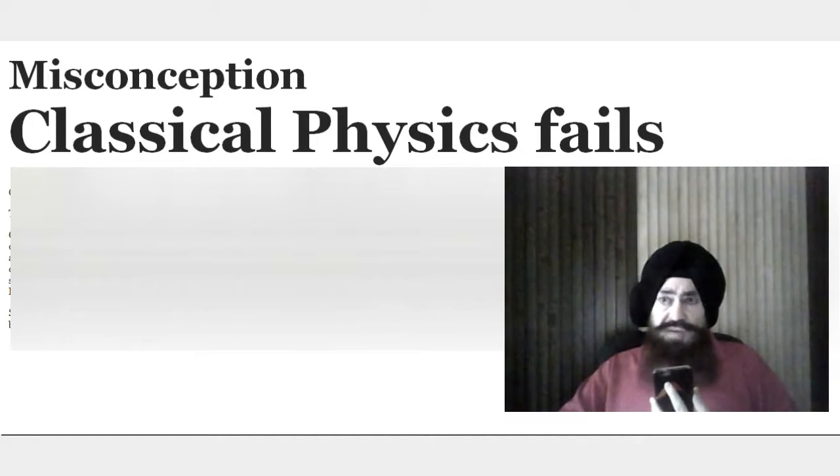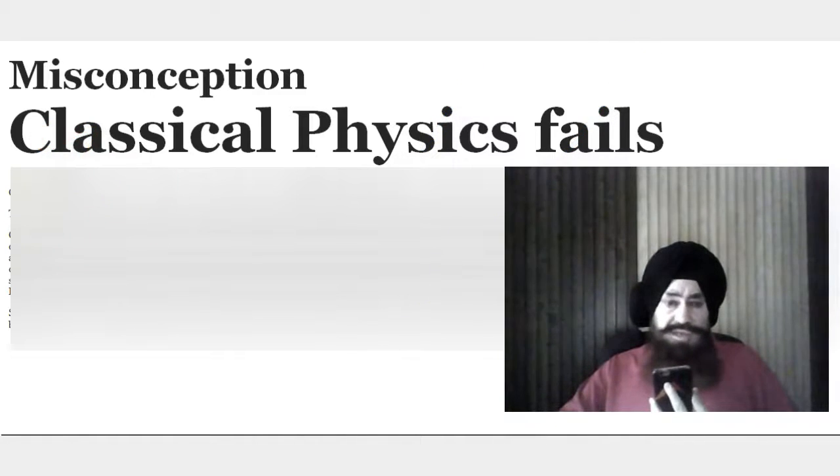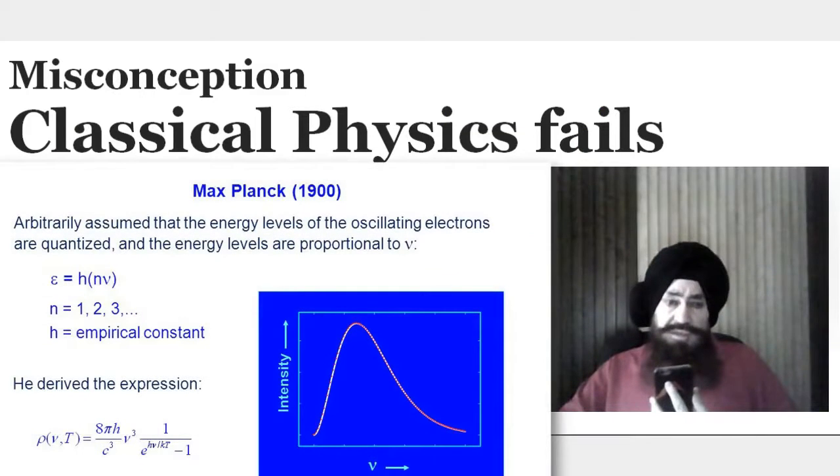Classical physics cannot explain black body radiation or photoelectric effect. For photoelectric effect, to explain how electrons are emitted, classical physics could not do it. There you have to take help of quantum. Black body radiation can only be explained with quantum.